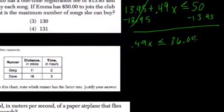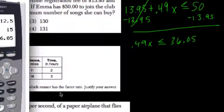That means that x, the amount of songs she can buy after paying for membership, cannot exceed $36.05. That's the amount of money she has.